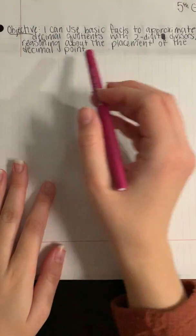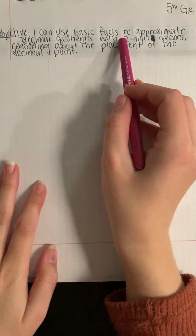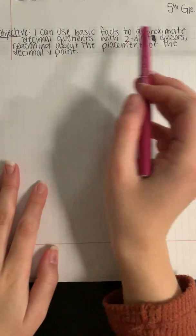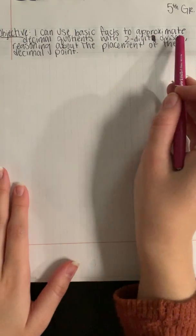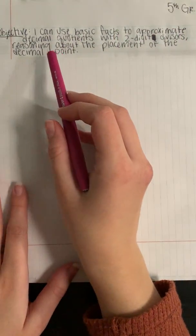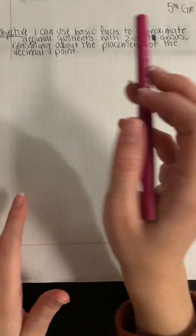Hey fifth grade, our screencast today is on using basic facts to approximate or estimate decimal quotients when we have two digit divisors. We're also going to be looking at where that decimal point is going once we get our answer.